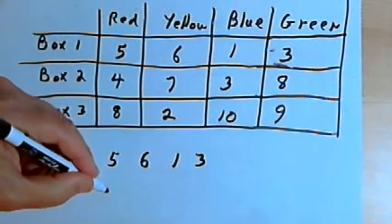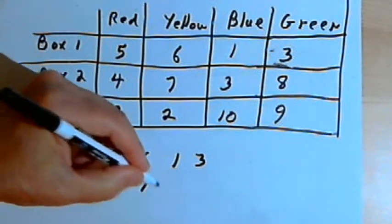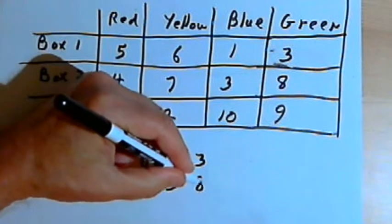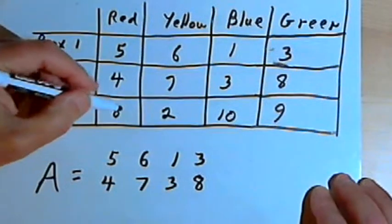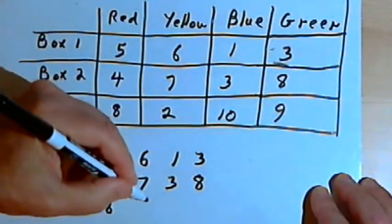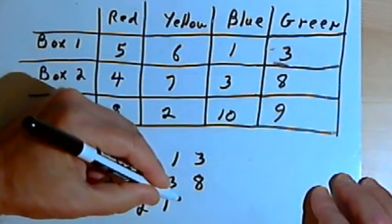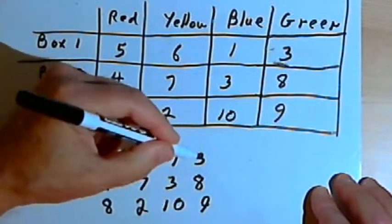For box 2 I had 4, 7, 3, and 8. And for box 3 I had 8, 2, 10, and 9.